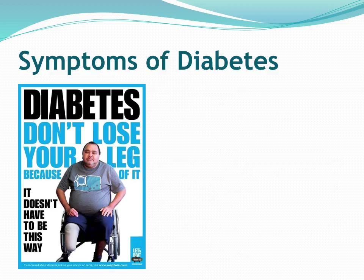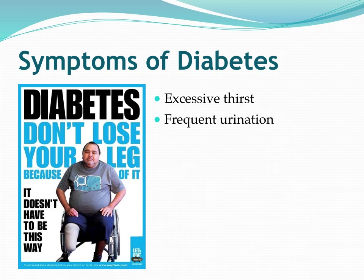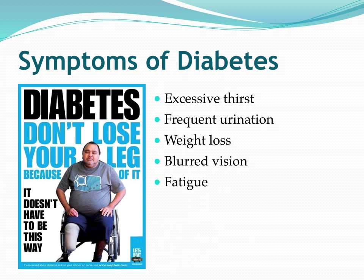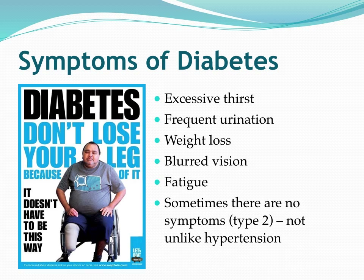What are some of the symptoms of diabetes? The classic ones include excess thirst, frequent urination, weight loss, blurred vision, and fatigue. And sometimes it's important to remember that there actually are no symptoms of type 2 diabetes. In many ways it's like hypertension, which we call a silent killer — most people don't know they have it until there's some type of incident associated with it, such as a transient ischemic attack.